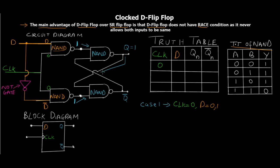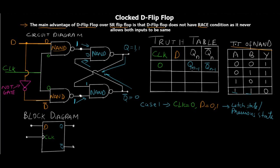Since both SR latch NAND gates receive one-one, the circuit retains its previous state. For example, if Q was one, it feeds back as one to the lower NAND gate; one-and-one gives Q-bar = zero; that zero feeds back to the upper NAND gate; one-and-zero gives Q = one again. So the output is Q(n-1) and Q-bar(n-1) — the previous state. This is the latched state: the clock keeps the entire circuit low and holds the output regardless of D.